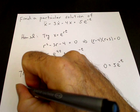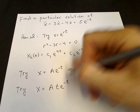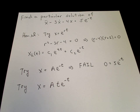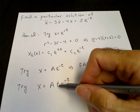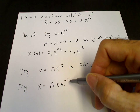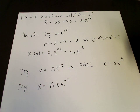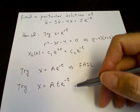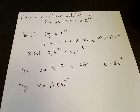Instead, the trick is to try x equals a constant times t times e to the minus t. The reason this works is that when we substitute in, the terms where t doesn't get differentiated look like a constant times e to the minus t, so they all go to 0 because e to the minus t is a solution of the homogeneous equation. That leaves only the terms where t gets differentiated, so the left-hand side will have terms independent of t that can match the right-hand side, which is 5 times e to the minus t.